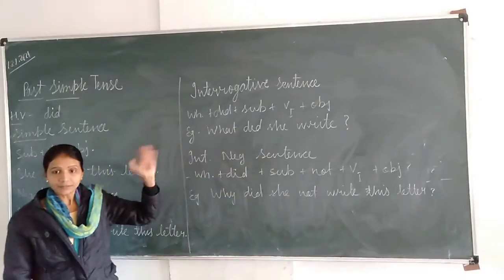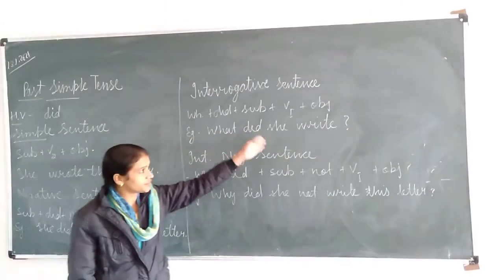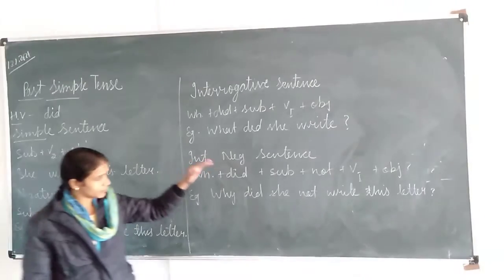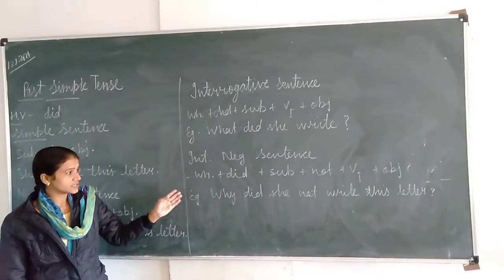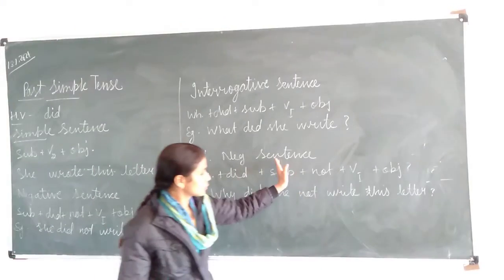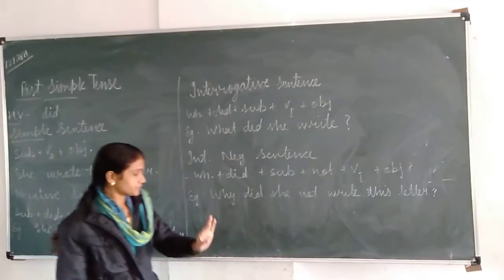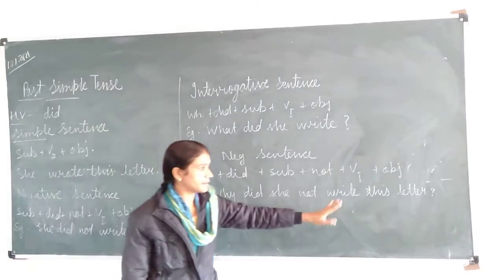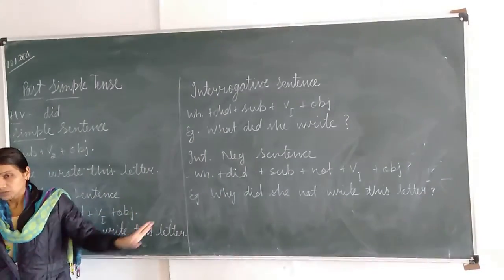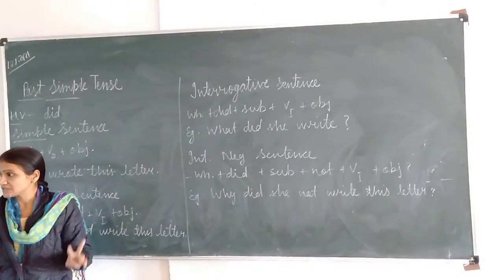Did she write this letter — this is a yes/no question. And what did she write — this is a WH question. Now we will discuss about the interrogative negative sentence. Sentence structure is: WH word, then did, then subject — because it is negative also, so we will use not — then verb first form and object. Example: Why did she not write this letter? This is an example of an interrogative negative sentence. After each sentence structure, you have to write two examples in your book.